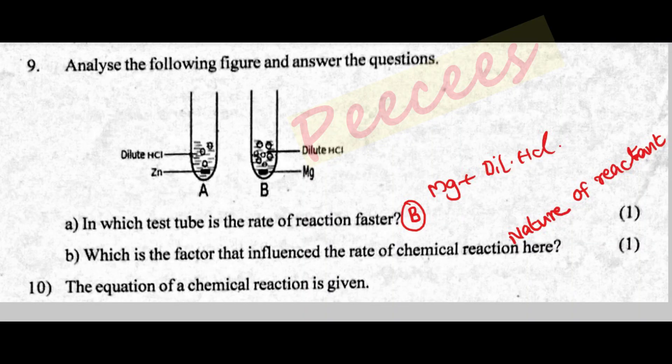Analyze the following figure and answer the questions. In which test tube is the rate of reaction faster? The rate of reaction is faster in the test tube with light magnesium. The factor that influences the rate of chemical reaction here is the nature of the reactant — magnesium.